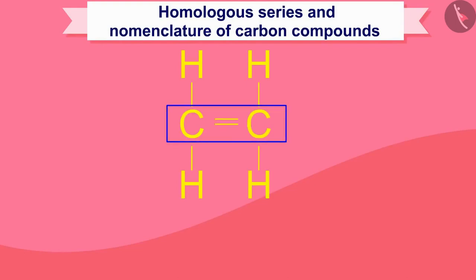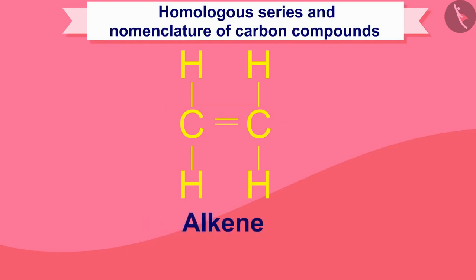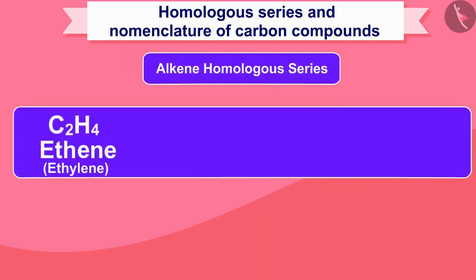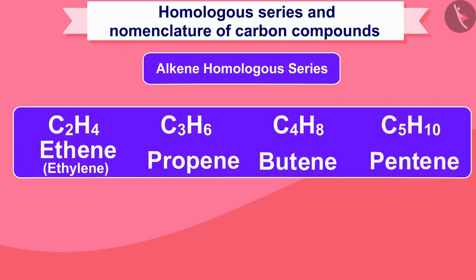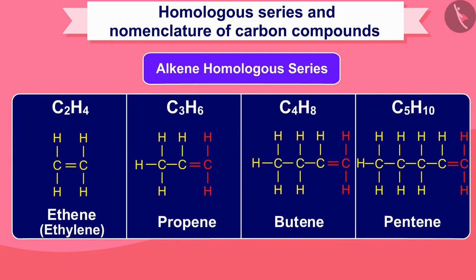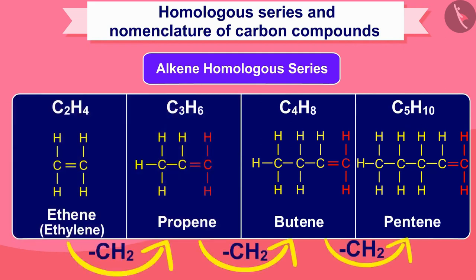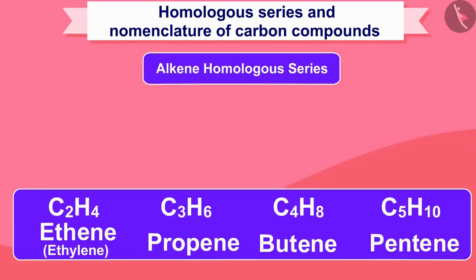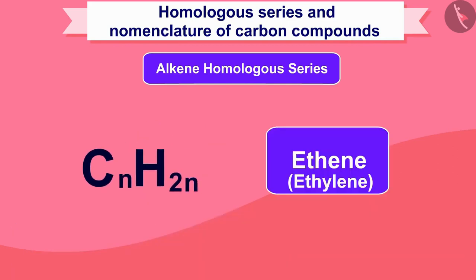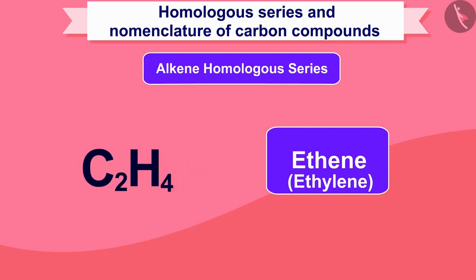If the hydrocarbon compound contains a carbon-carbon double bond, that category is called alkene — '-ene' is added at the end of the name. For example: ethylene, propene, butene, pentene, etc. In this series too, there is a difference of CH2 unit in moving from one member to another, and we can represent any compound by the formula CnH2n. For example, in ethene, n equals 2, giving the molecular formula C2H4.